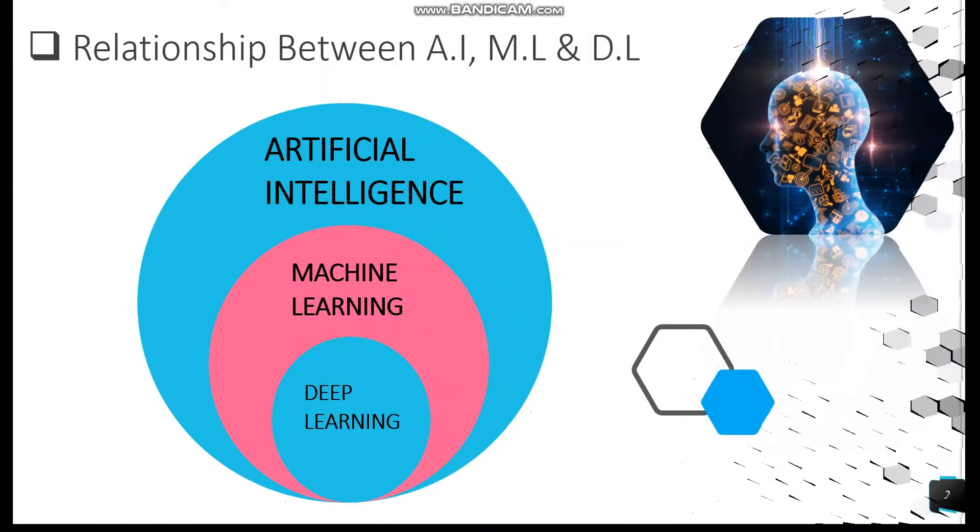Artificial intelligence is a vast field. Under artificial intelligence we have machine learning and deep learning. Machine learning is a subset of artificial intelligence, and deep learning is a subset of machine learning as shown on the screen.